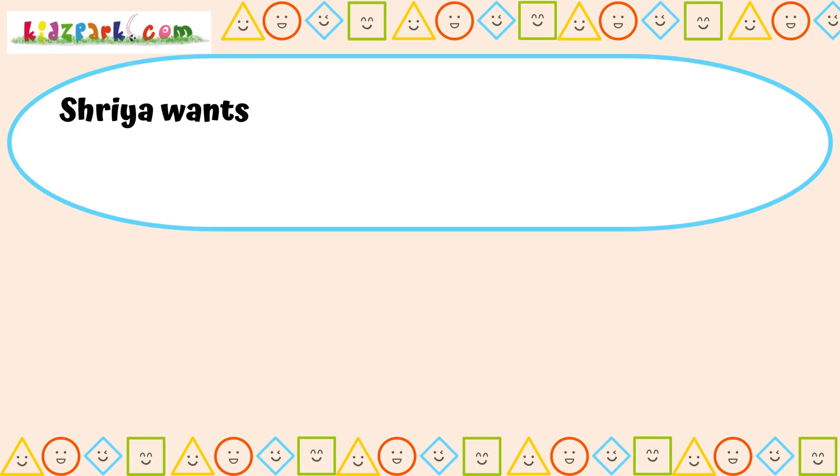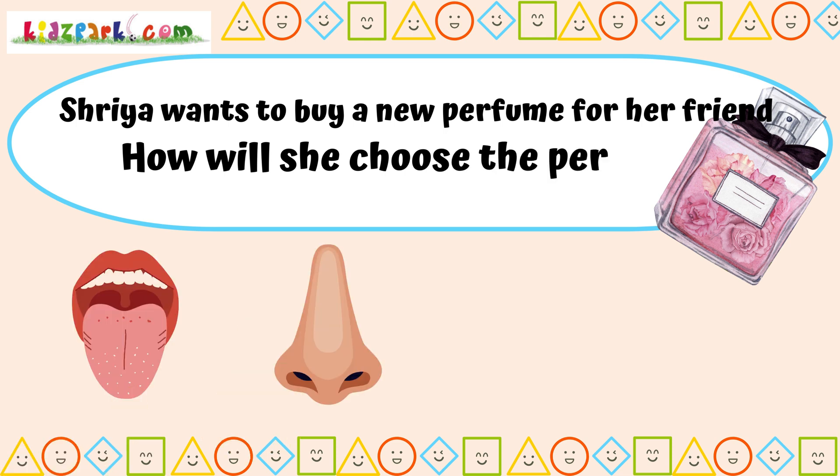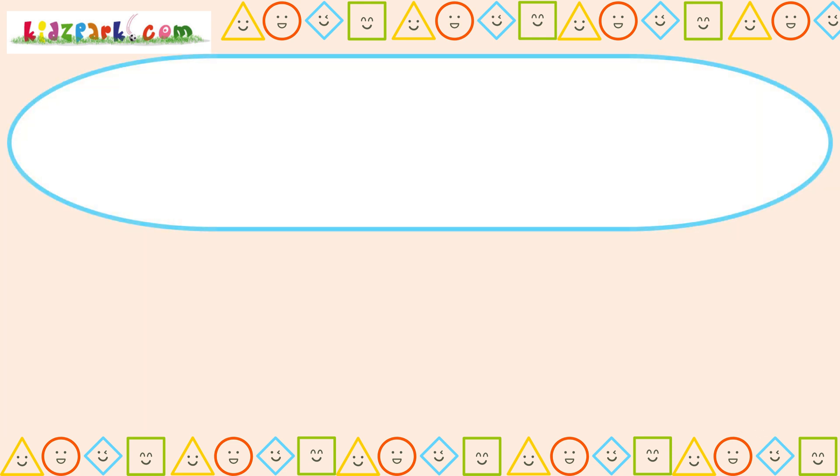Shriya wants to buy a new perfume for her friend. How will she choose the perfume? By tasting, by smelling, by touching. Shriya will buy the perfume after smelling it.